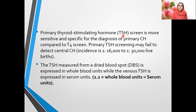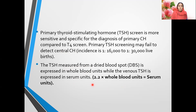We do a primary TSH screen because it is better, more sensitive, and specific for the diagnosis of congenital hypothyroidism compared to a primary T4 screen. The only disadvantage is we may miss central hypothyroidism, which has an incidence of around 1 in 16,000 to 1 in 30,000 live births. TSH measured from the DBS (dry blood spot) is expressed in whole blood units, whereas venous TSH is expressed in serum units.